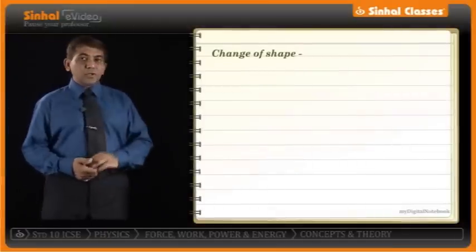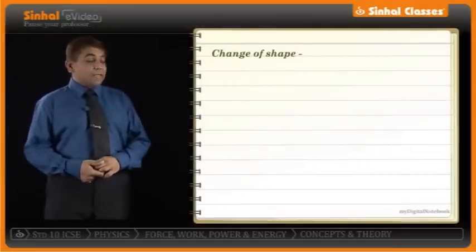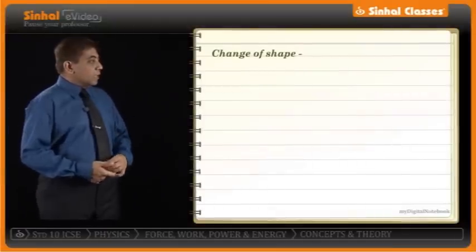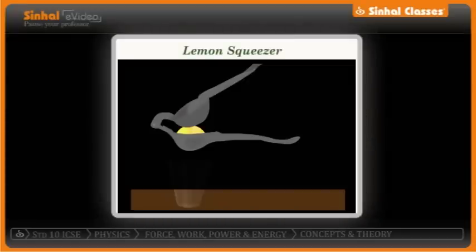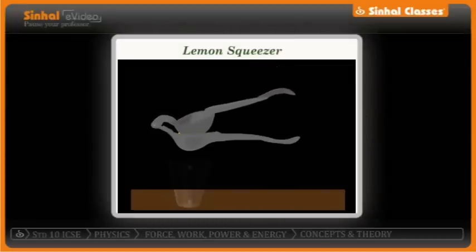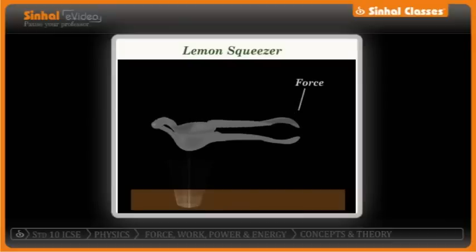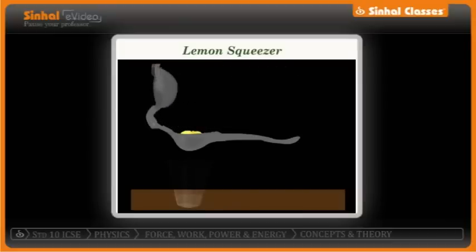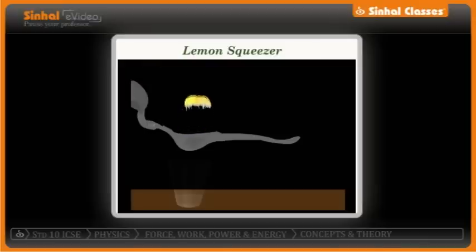Force also causes a change of shape. When a lemon squeezer is used to extract juice from a lemon, force is applied on the squeezer, and as that force or effort is applied, the shape of the lemon changes. So force definitely causes a change in shape.